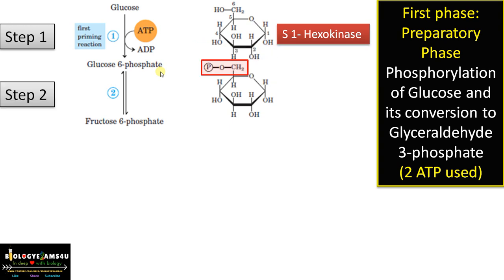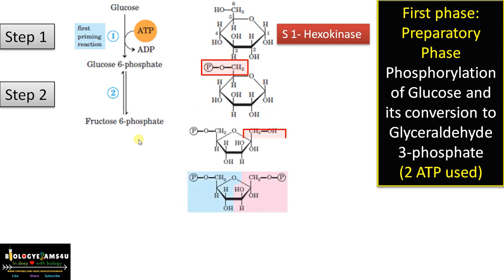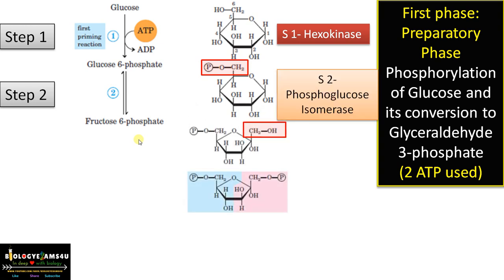Step 2: glucose-6-phosphate is converted to fructose-6-phosphate. Glucose and fructose are isomers, and the enzyme is phosphoglucose isomerase — phosphoglucose being the substrate name and isomerase the enzyme type.